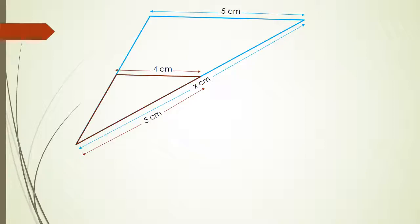Now, not all the time are you going to get opposite over adjacent, because you're not going to have right-angle triangles. But the ratios still work. In this sense, you don't need to put it as opposite over adjacent, but you can use the sides. For example, in this case, the brown triangle — I'm going to say that this angle here is the common angle for the brown triangle and the blue triangle.